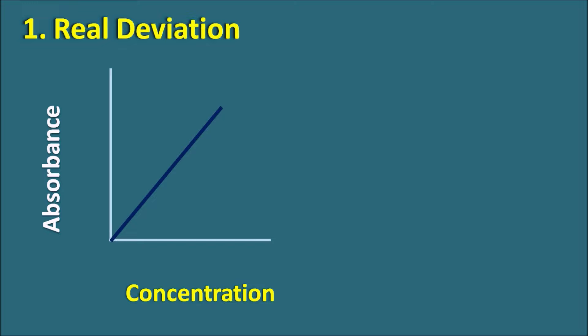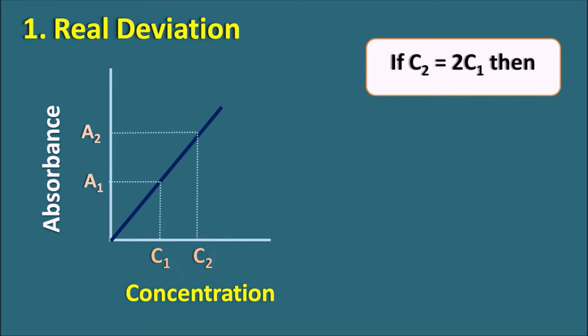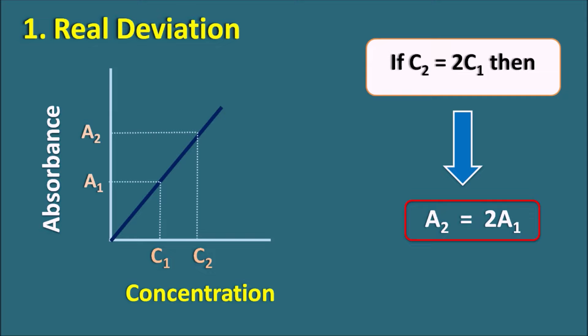What is real deviation? Suppose we have an absorption curve where the Y axis is absorbance and the X axis is concentration. In an ideal case it gives a straight line. Suppose we have a sample with concentration C1 and we measure its absorbance as A1. If we take another sample C2 where C2 = 2C1 — that is, the second concentration is double the first — then ideally A2 = 2A1, meaning the absorbance is also doubled. But sometimes we cannot observe this relation; when the concentration is doubled, the absorbance is not correspondingly doubled because of the real deviation.